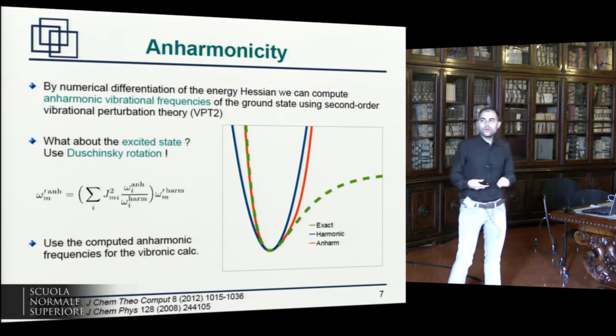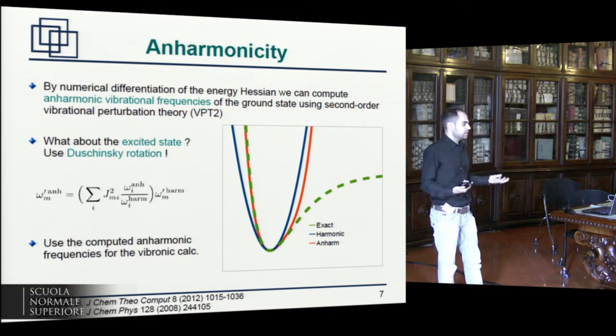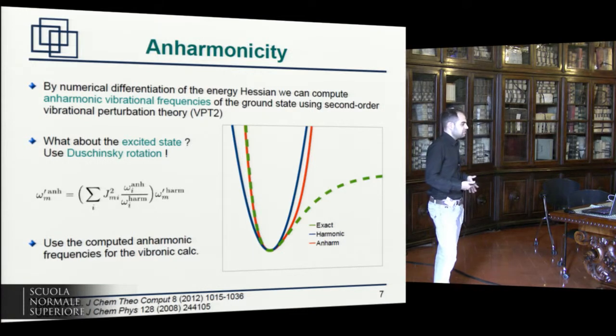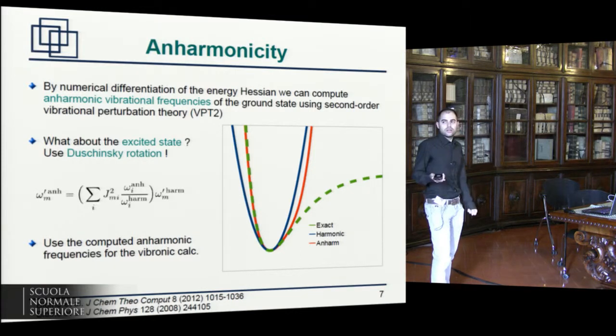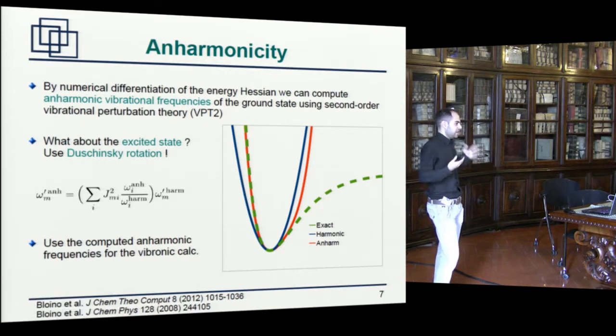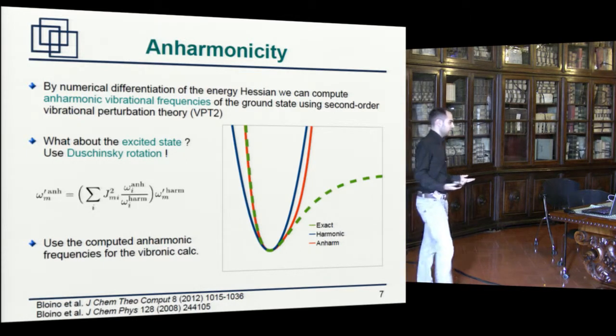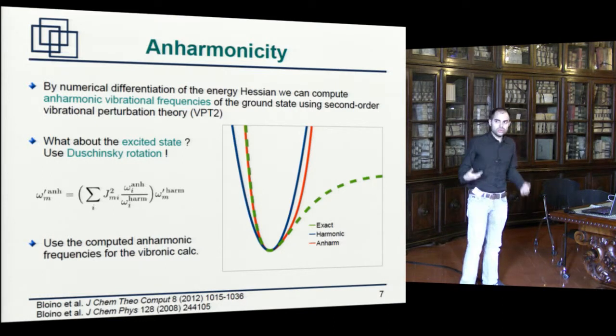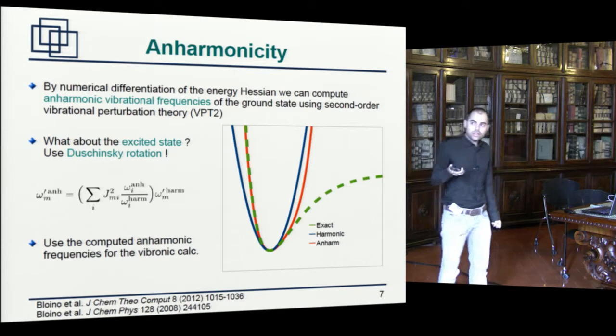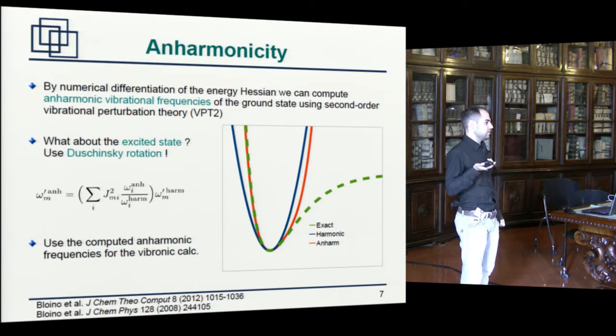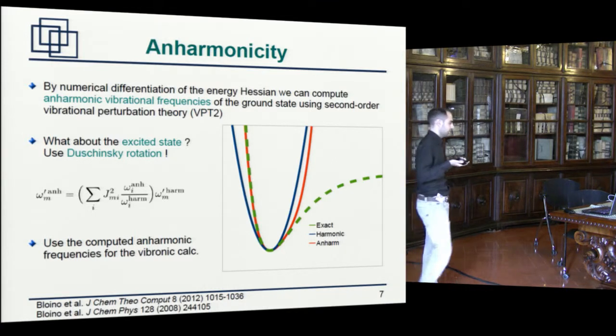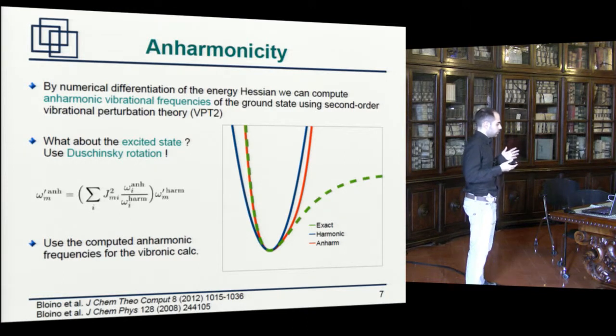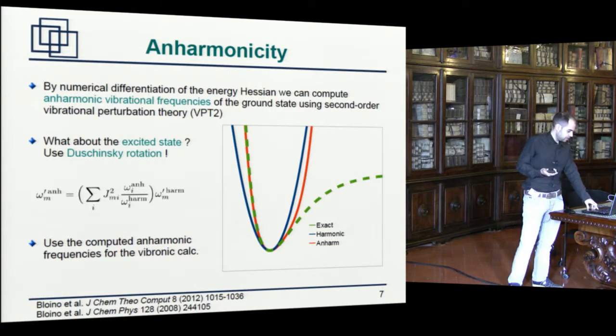So let's start with the anharmonicity. What we do is to find the anharmonic frequencies of vibration for the ground state. The method for this which we choose is vibrational perturbation theory. And this has been done for many years. Of course, it's a very expensive thing to do computationally. And if it is very expensive for the ground state, for the excited state, it's almost impossible. It's very difficult unless you have a very small system. So what we instead choose to do is to do this for the ground state and then use the Dushinsky relation to estimate the excited state vibrational frequencies. This way, we can avoid having to compute them at the initial.